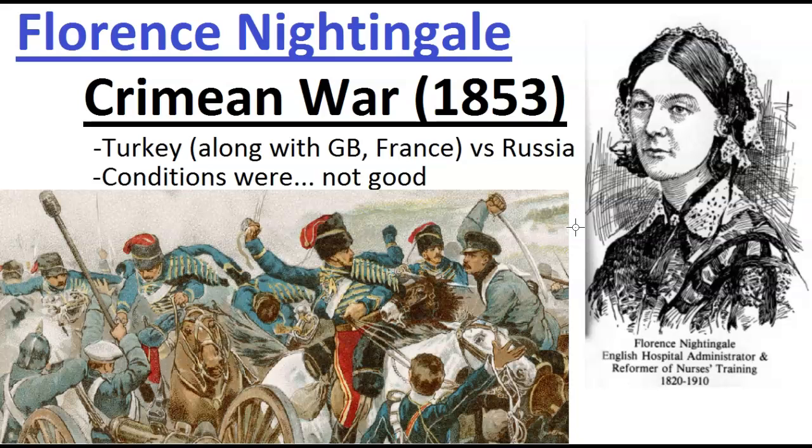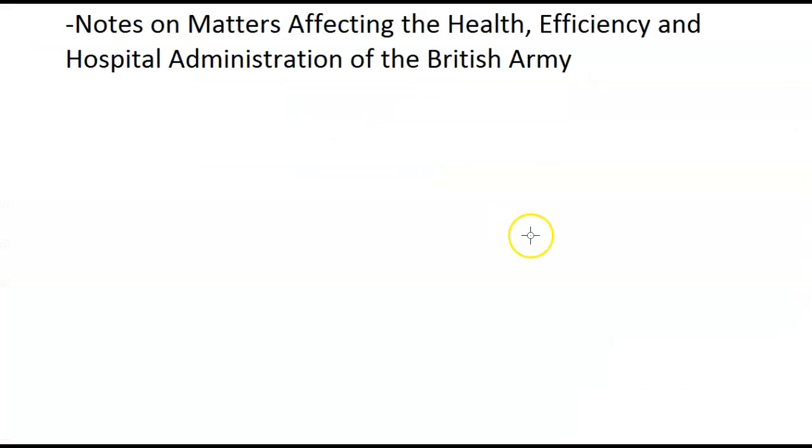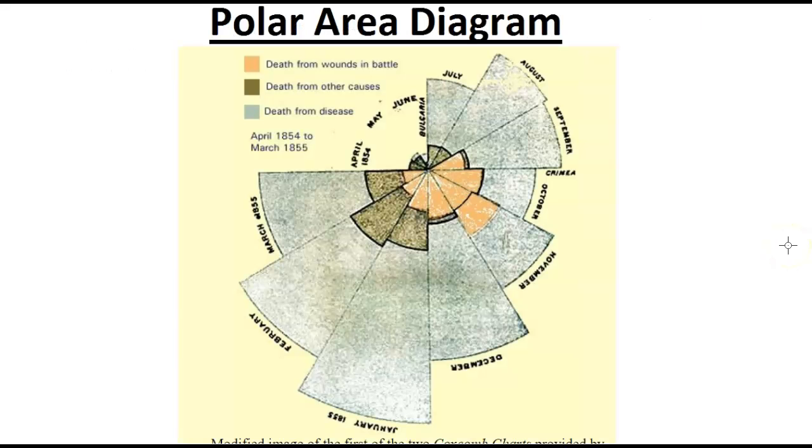So sometimes these wounds would be bad, and people wouldn't really die right away, which has everything to do with what Florence Nightingale did on her notes on the matters affecting the health, efficiency, and hospital administration of the British. She mainly came up with this polar area diagram that really just spoke a thousand words.